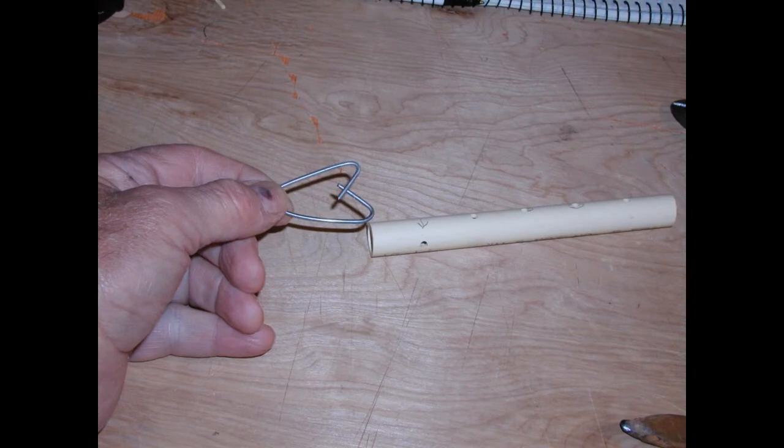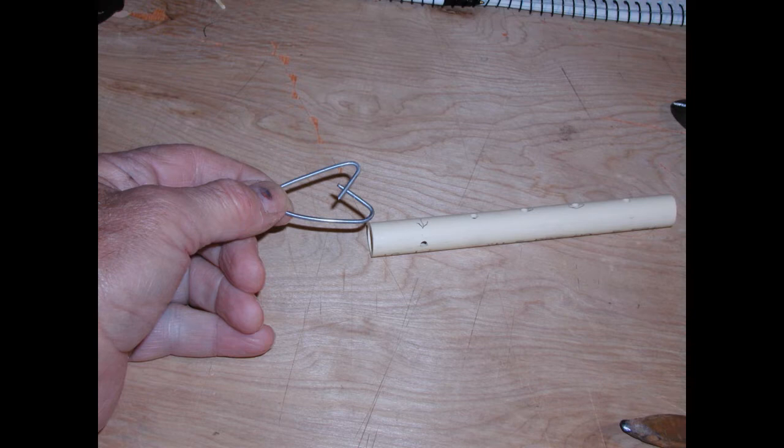This just shows the shape that I bend that halyard attachment wire in. This connects through the hole that's drilled in the PVC at a 90 degree angle to the rest of the holes.